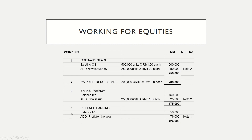For working on retained earnings, the balance brought forward given in the table is RM350,000. You need to add the profit for the year as per Note 1. In Note 1 it is stated that profit for the year ended 31st December 2017 was RM76,000. So RM350,000 plus RM76,000 equals RM426,000.